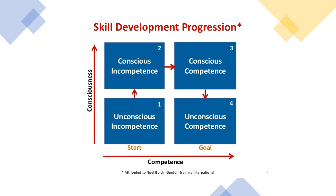We become unconsciously competent — the fourth stage. Here we are expert at the task. In other words, we don't have to think about what we are doing. We have mastered the skill and we are able to perform it just like driving to work without thinking about it — we somehow show up to work, having gone through the whole process safely and unconsciously. The goal of every learning is to become unconsciously competent, and that's when a new habit forms.